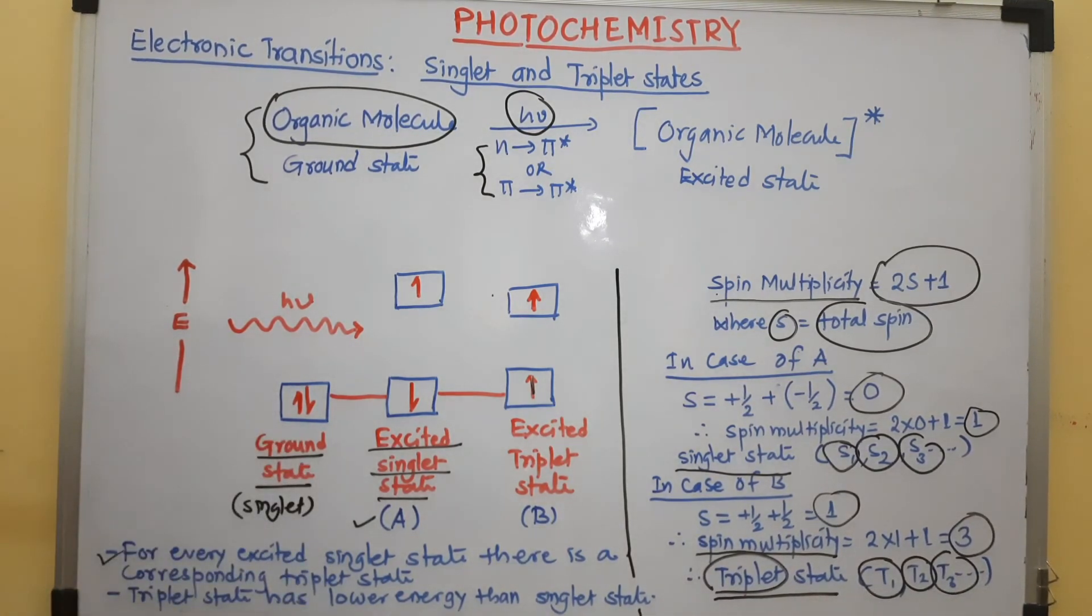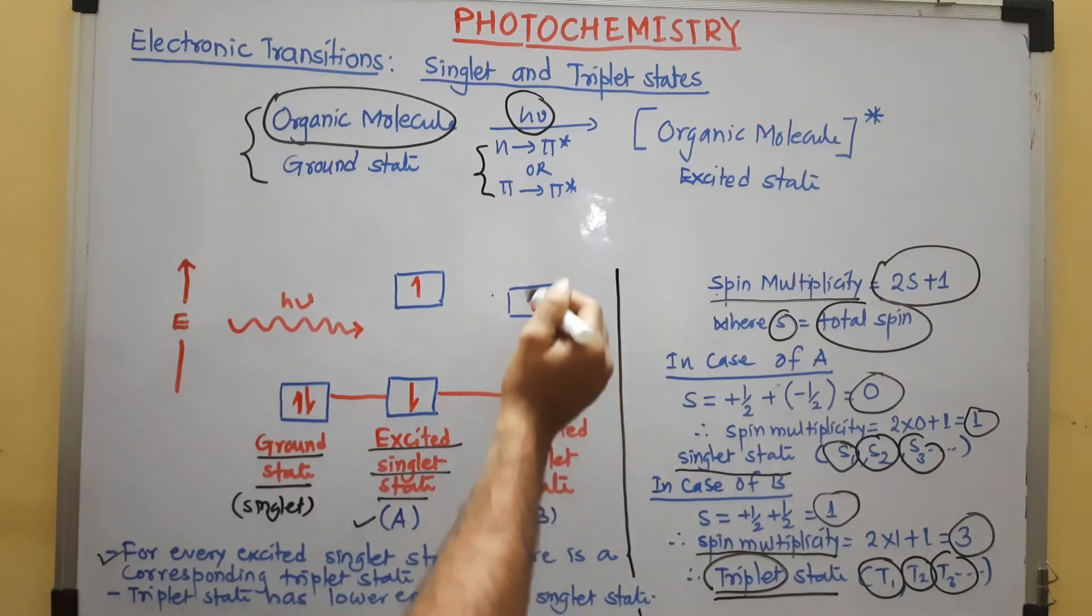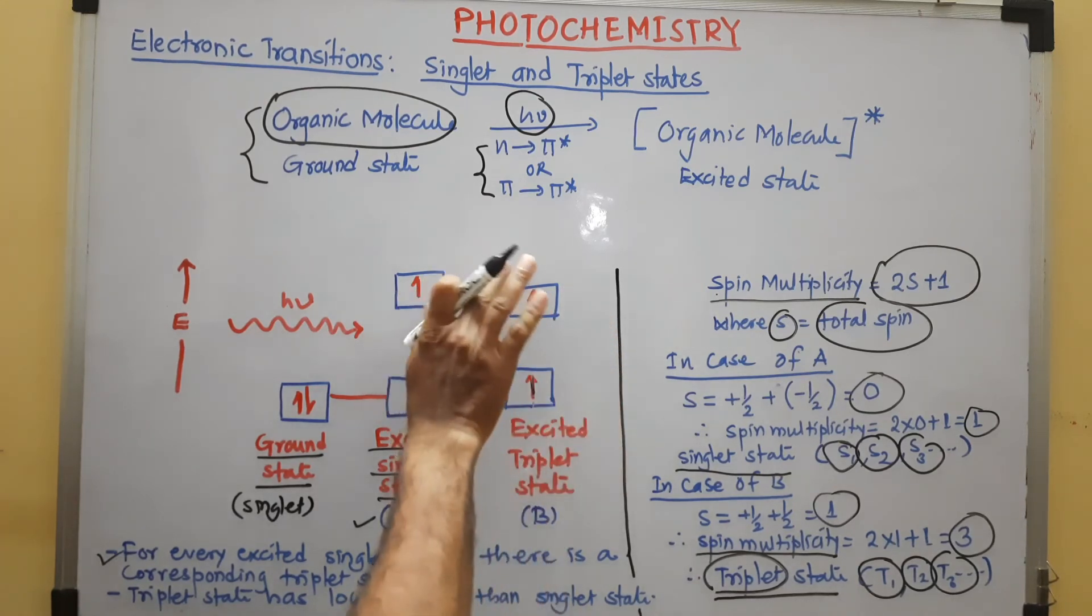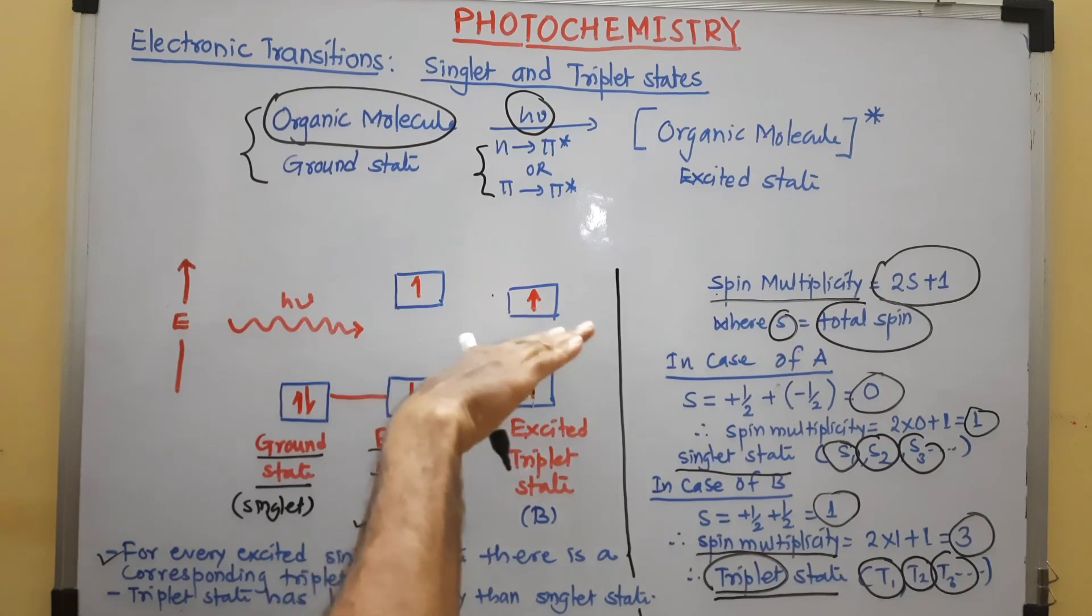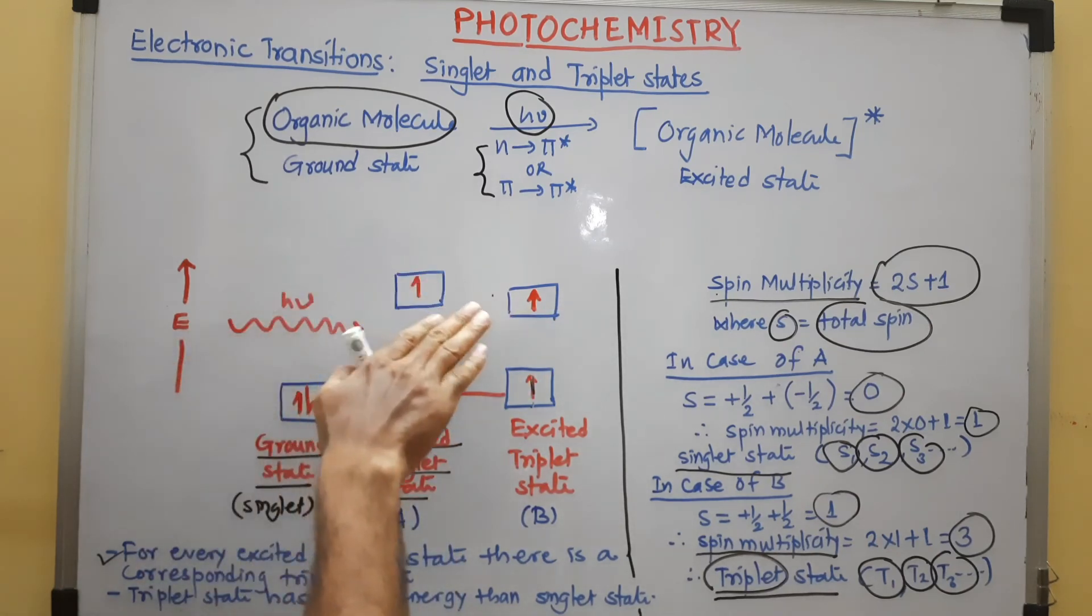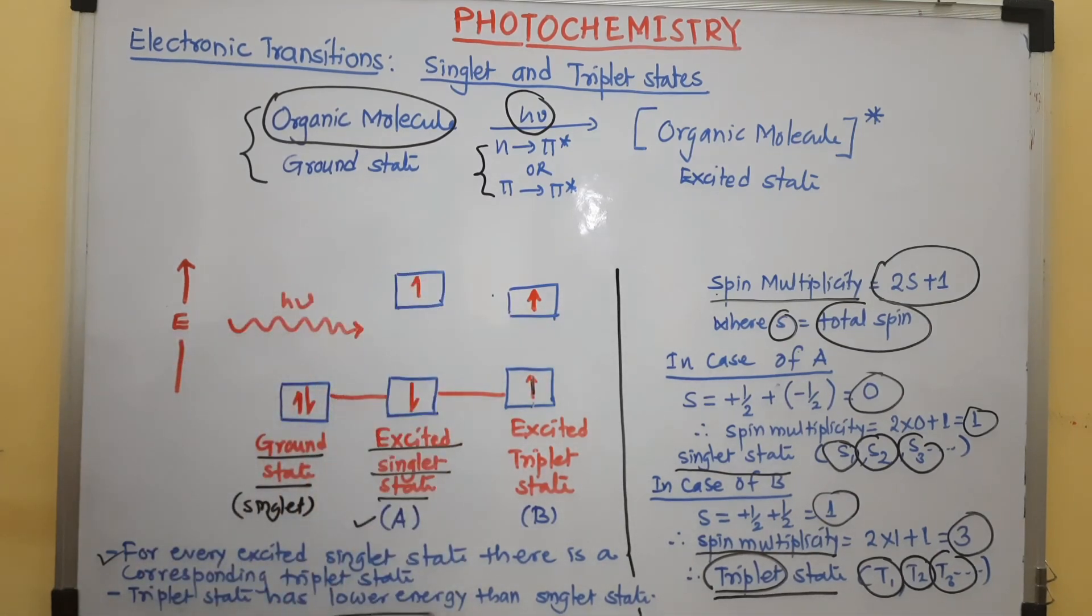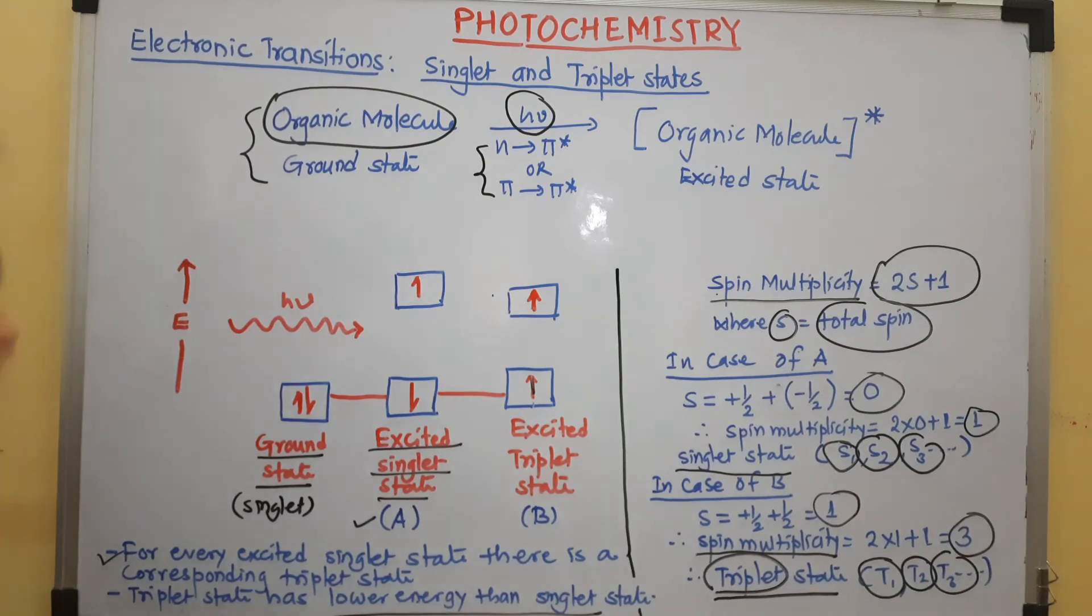Triplet state has little lower energy because there is no interaction between the electrons. So, because of this, energy is little lower as I have shown here. That also you must remember.